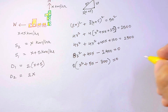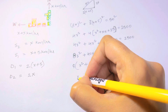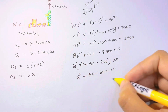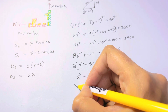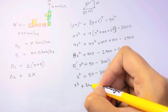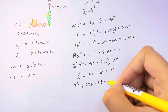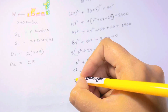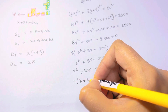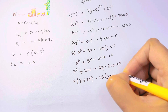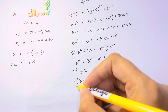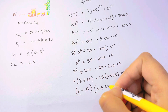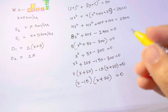Now let's factorize the quadratic x² + 5x − 300 = 0. We split the middle term: x² + 20x − 15x − 300 = 0. Factoring gives x(x + 20) − 15(x + 20) = 0, so (x − 15)(x + 20) = 0.